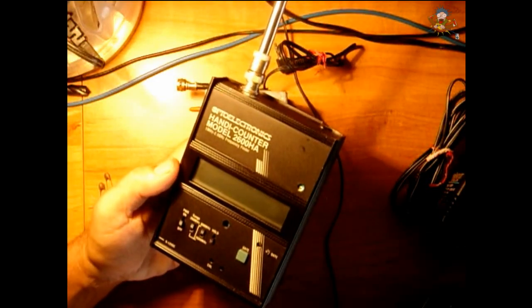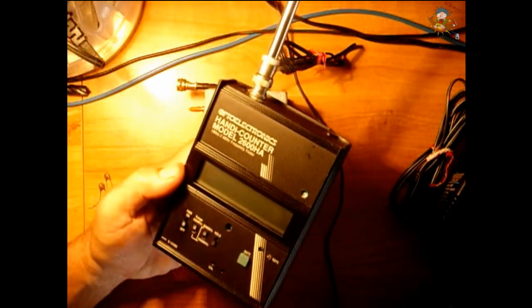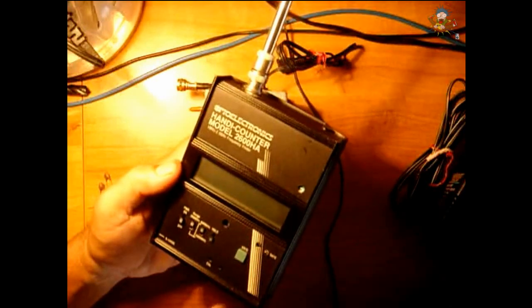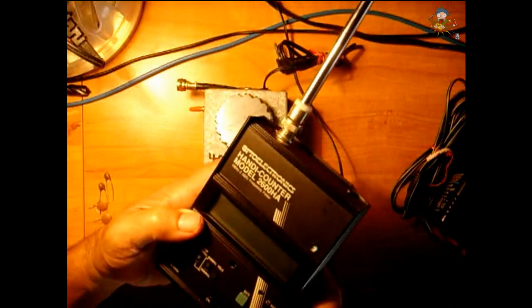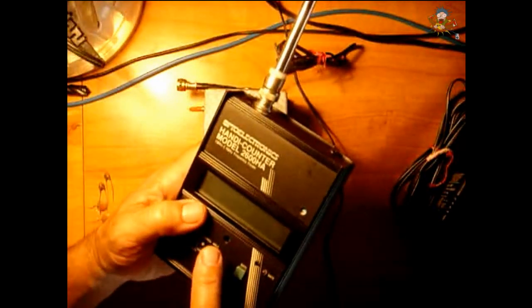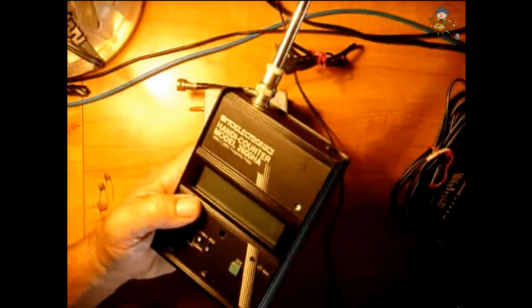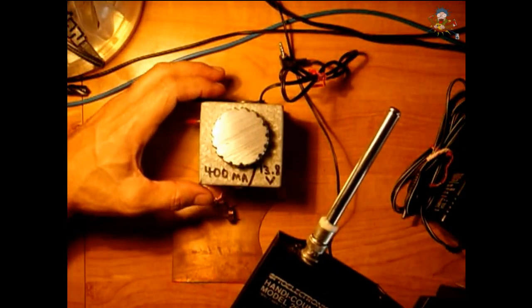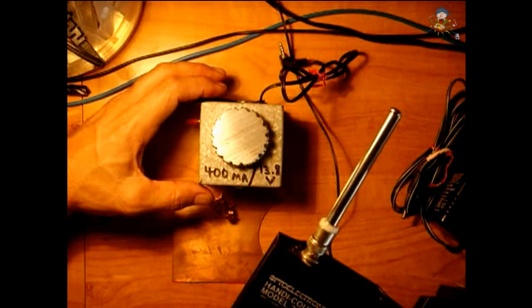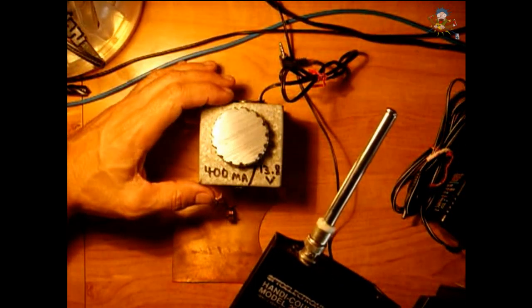So even though you're transmitting at 100 megahertz, you may see on here 200 megahertz or 300. And that's what you're trying to stop. You only want to have the transmitted frequency of 100. And you want to block out everything above that because if you don't, it could interfere with the aircraft bands and military bands and you don't want to do that.